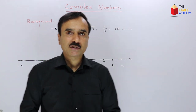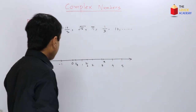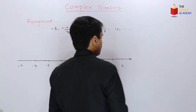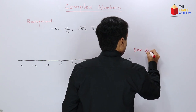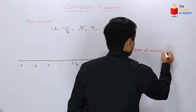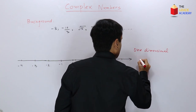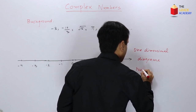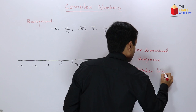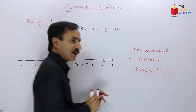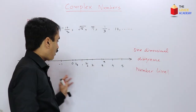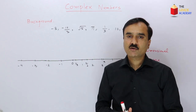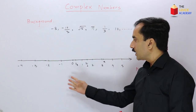Real numbers can be represented by a diagram called a number line, which is a one-dimensional representation. A number line is a one-dimensional representation of real numbers, so the set of real numbers is a one-dimensional number system.